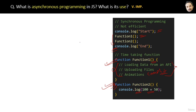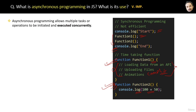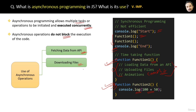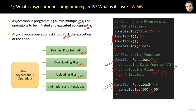Key points about asynchronous programming: it allows multiple tasks to execute concurrently, and asynchronous operations do not block the execution of other code. Use it when fetching data from external APIs, downloading or uploading large files, running animations and transitions, or any time-consuming operation. Remember that JavaScript is single-threaded, but by properly managing task execution with asynchronous programming we can make tasks run concurrently.